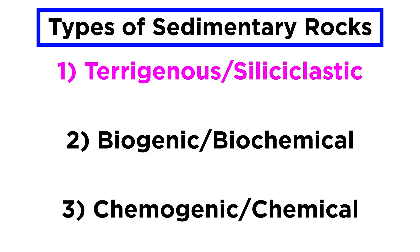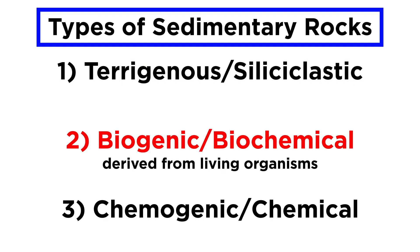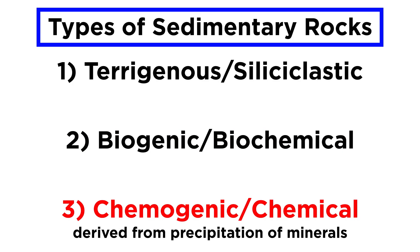Terrigenous and siliciclastic are used synonymously since most terrigenous sediments are derived from the erosion of silicate rocks. Biogenic or biochemical rocks are derived from living organisms, both directly and indirectly. Chemogenic, or chemical sedimentary rocks, are derived from the precipitation of minerals from natural waters, usually involving evaporation in arid climates.